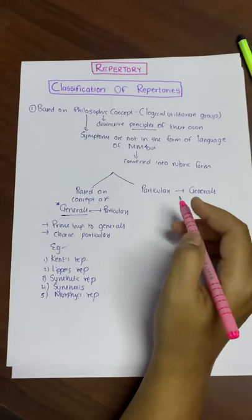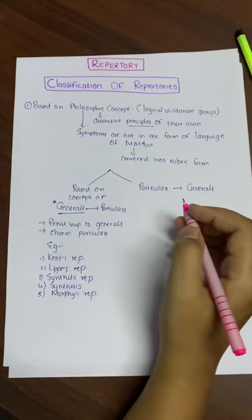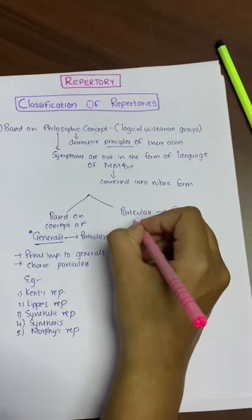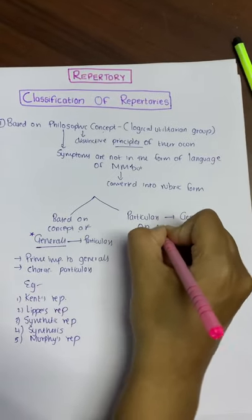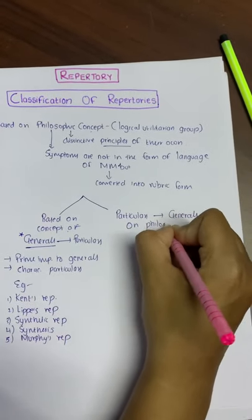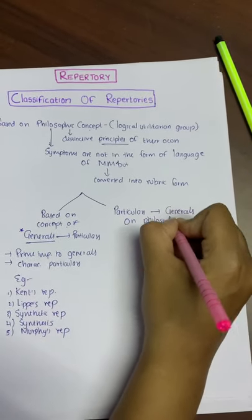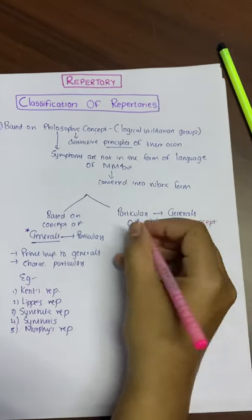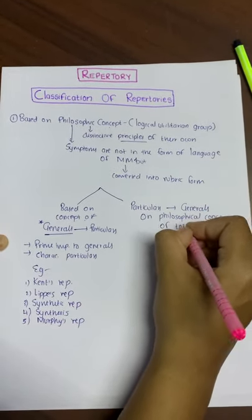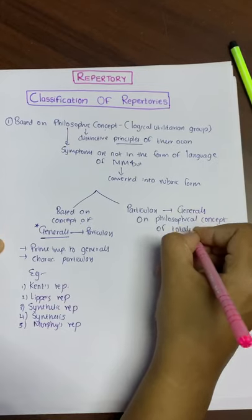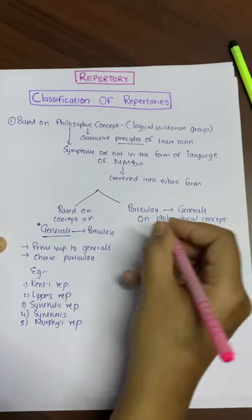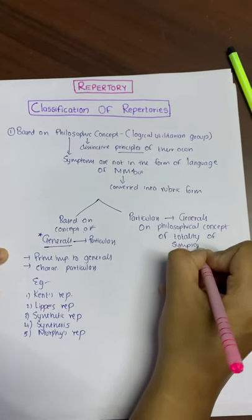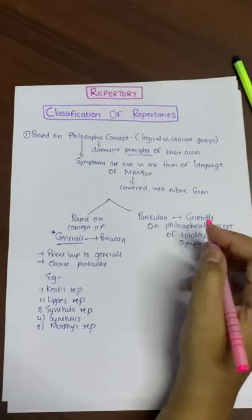Coming on to the second sub-group: particulars to generals, where particulars are given more importance. This is based on the philosophical concept of totality of symptoms.